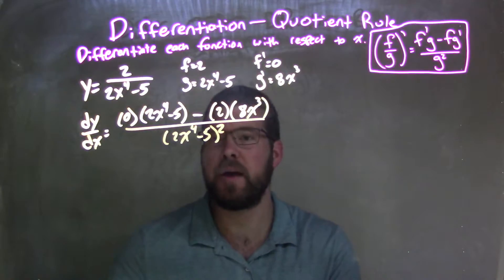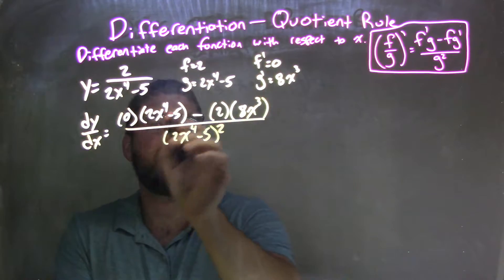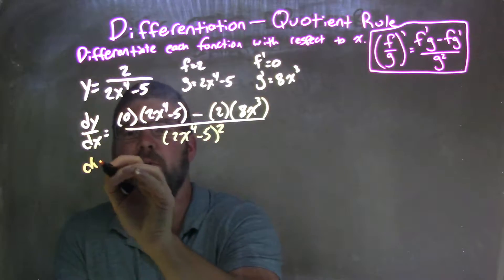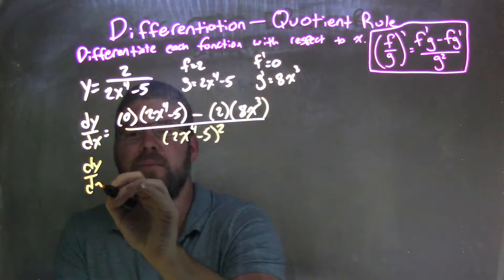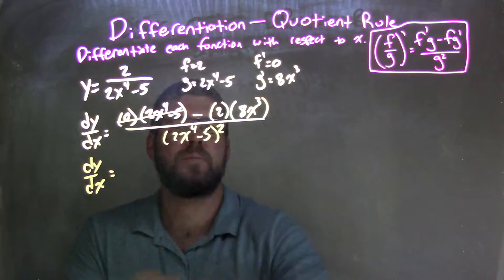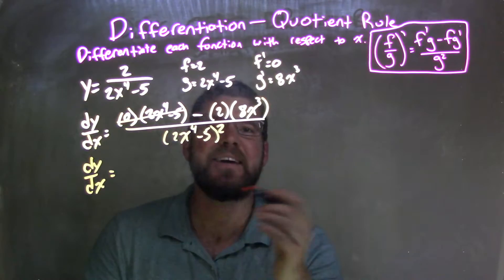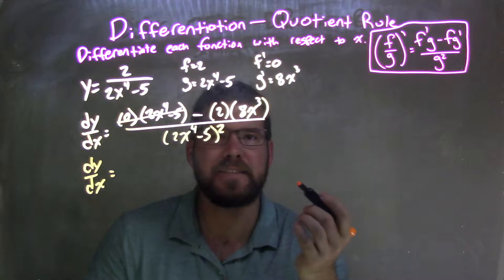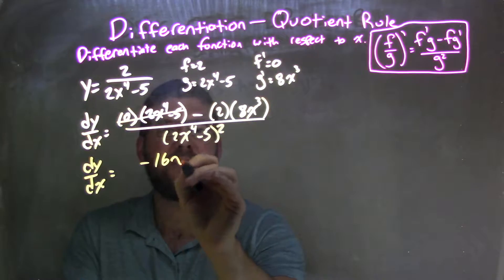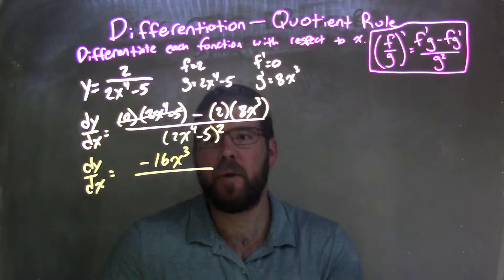So now let's simplify that. Well, 0 times this whole part is just 0, so we don't really need that. So our dy/dx — that just goes to 0. Then 2 times 8 is 16, and it's a negative, so we have negative 16x to the 3rd.